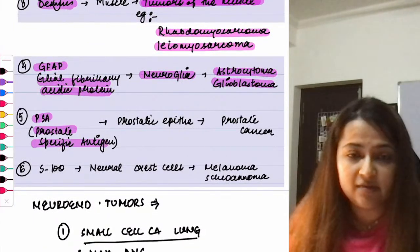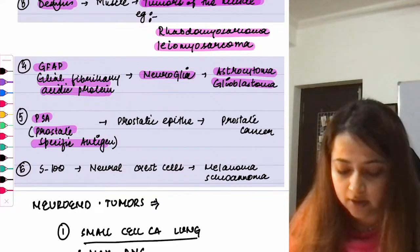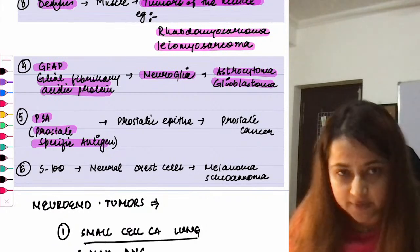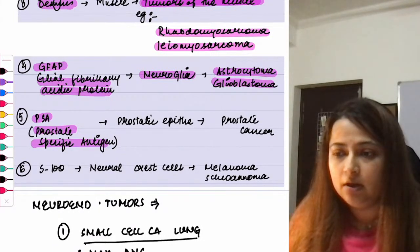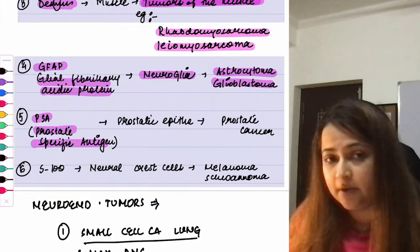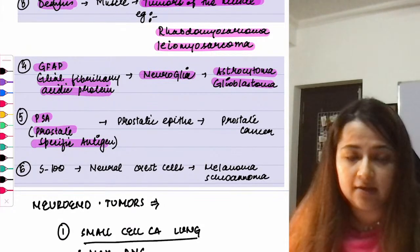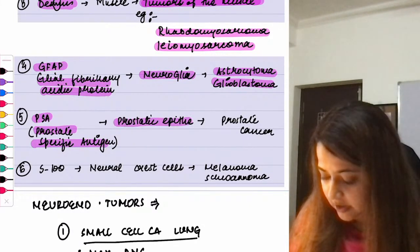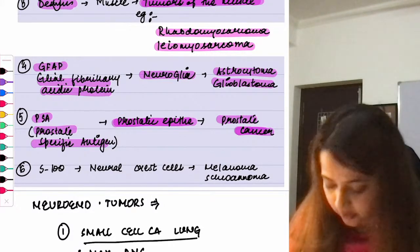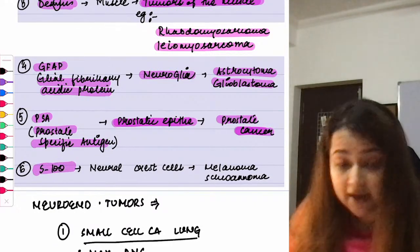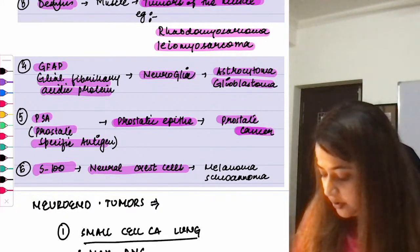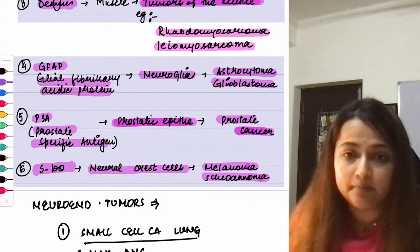PSA (Prostate Specific Antigen): remember, PSA is not a very specific IHC marker — it can be positive in prostatitis or BPH — but as a cancer IHC marker, it indicates cancer arising from the prostatic epithelium, i.e., prostate cancer. S100 indicates neural crest origin; examples are melanoma and schwannoma.